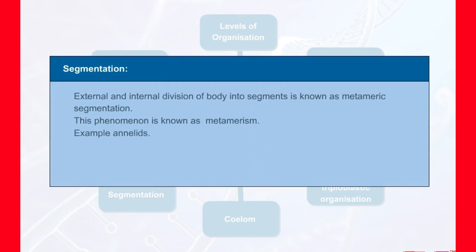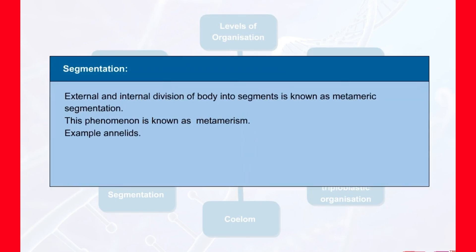Segmentation: in some animals like annelids the body is externally and internally divided into few metameric segments. This phenomenon is known as metamerism.